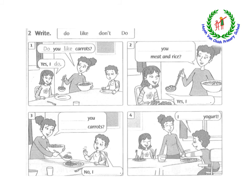Now, look at exercise number 2: Write. Ở bài tập số 2, các em sẽ viết các từ vào chỗ trống ở mỗi bức tranh. We have: do, like, don't, do. There is an example for you. Number 1: 'Do you like carrots?' — Bạn có thích carrots không? 'Yes, I do.' — Vâng, con thích. Vậy, chúng ta điền từ 'do' và 'like' vào câu đầu tiên và điền từ 'do' vào câu thứ 2. Tương tự, bức tranh số 2, số 3, số 4, các em sẽ điền những từ vào chỗ trống.